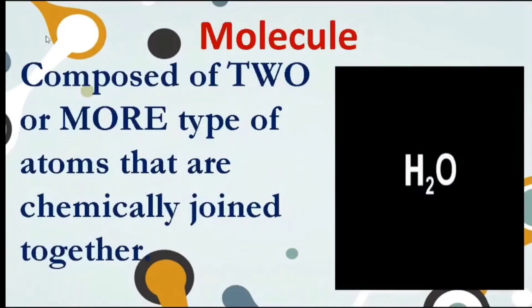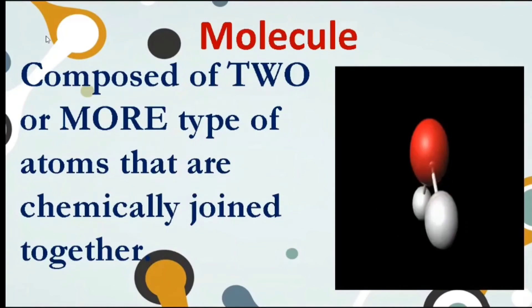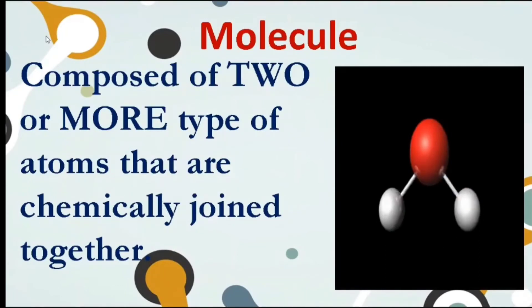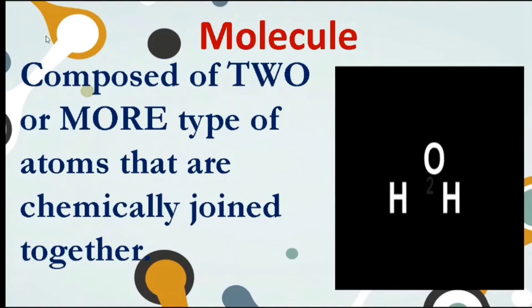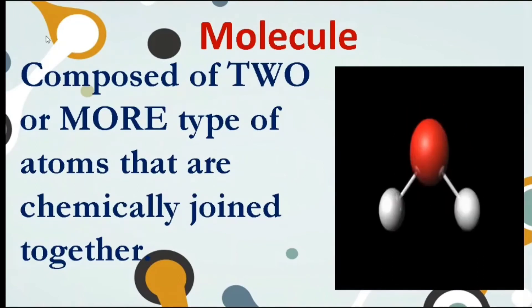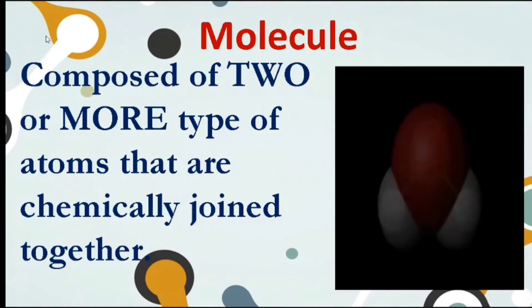A compound is composed of molecules, which are two or more types of atoms that are chemically joined together. An example of this is a water molecule. Water molecule is made up of one oxygen atom, represented by the red sphere, and two hydrogen atoms, the white spheres.